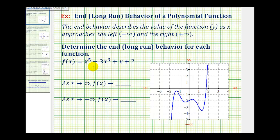The notation we use for end or long run behavior is given below. As x approaches positive infinity, f of x approaches some value. And as x approaches negative infinity, f of x approaches some value.